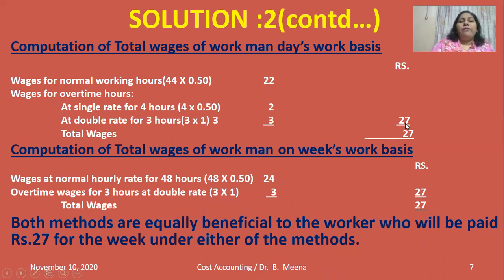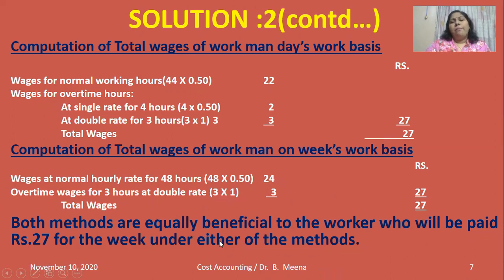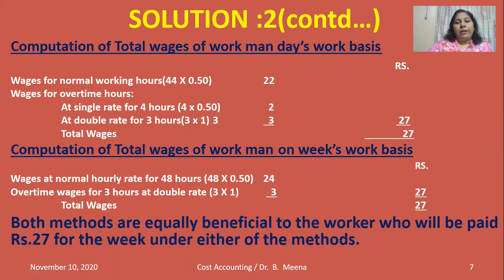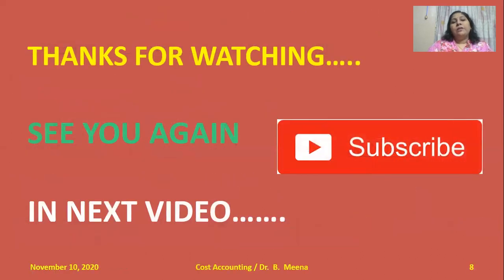Both methods are equally beneficial to the worker, who will be paid 27 rupees for the week under either scheme. This is another problem model showing how to calculate the normal time wages and overtime wages of workers. Thanks for watching — see you in the next video, subscribe to my channel, keep supporting me, and share your comments.